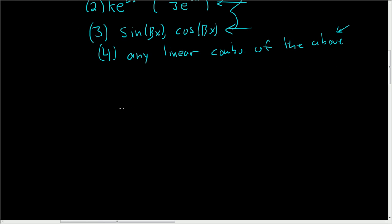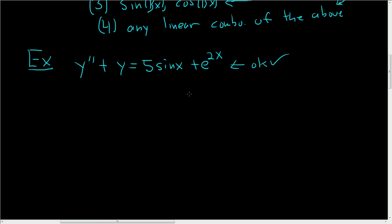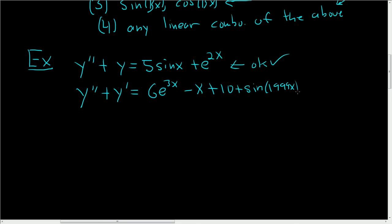Let's look at some quick examples to show how this works. Can we use undetermined coefficients? For example, y'' + y = 5sin(x) + e^(2x) — yes, this is okay, we can use it. What about y'' + y' = 6e^(3x) − x + 10 + sin(1999)? No problem there — we have an exponential, a polynomial, and a sine function, so everything is okay.